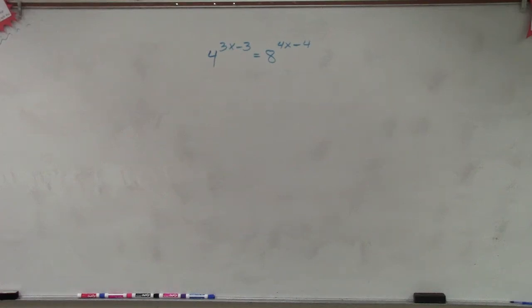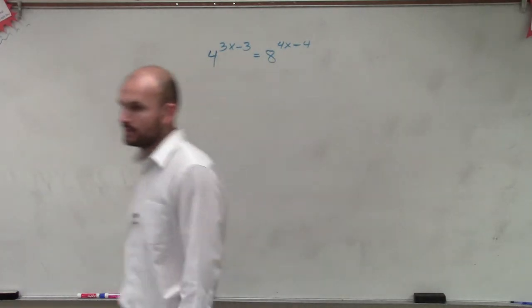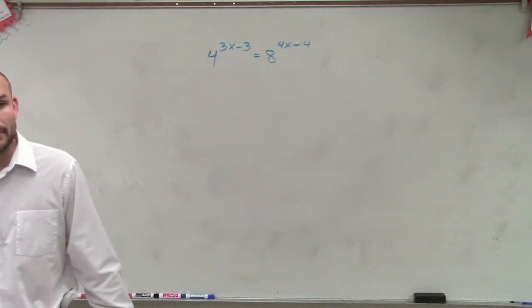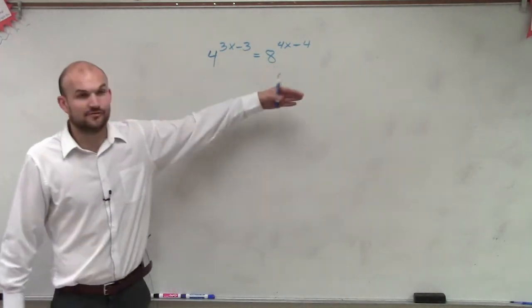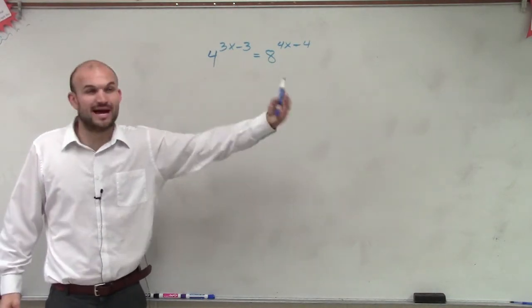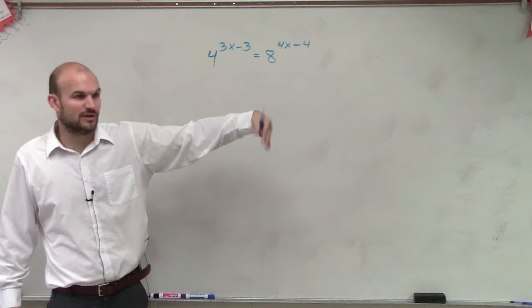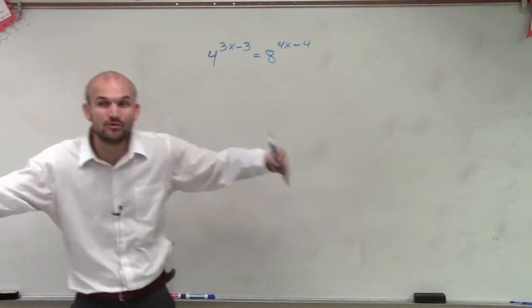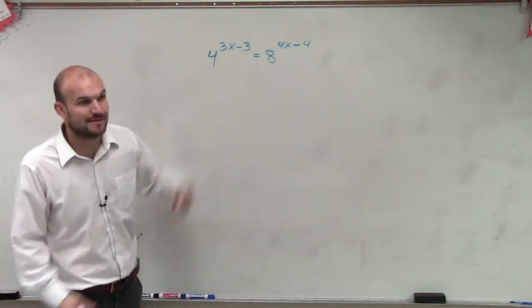So on this problem, what I'm going to want to do is I need to convert this. We know the rule works. If I have 2 squared equals 2 to the x, I know x has to equal 2, right? They have to equal as long as they have the same base. But that only works when they have the same base.